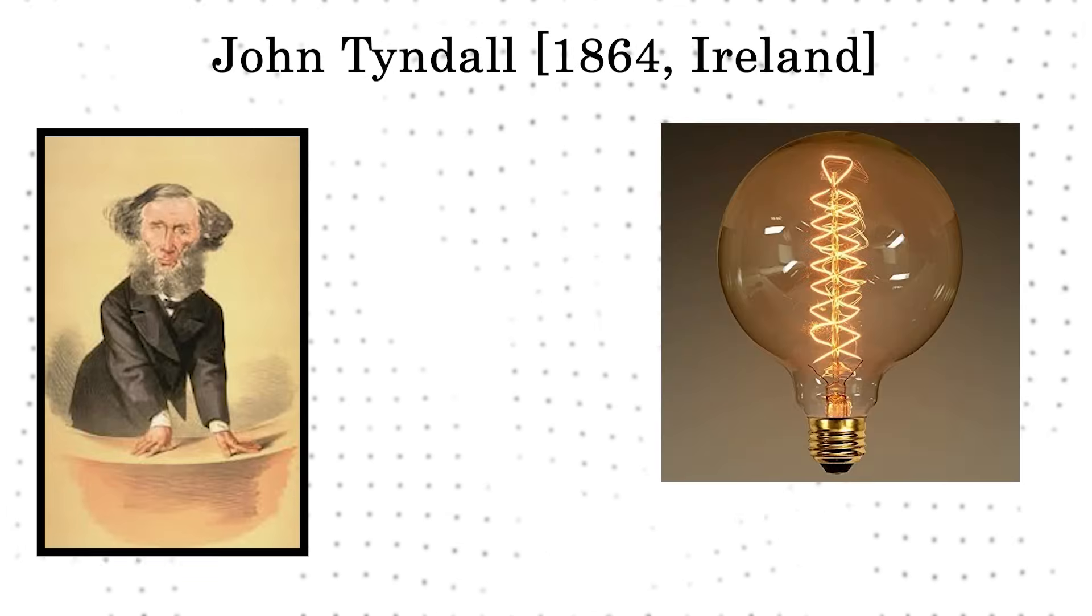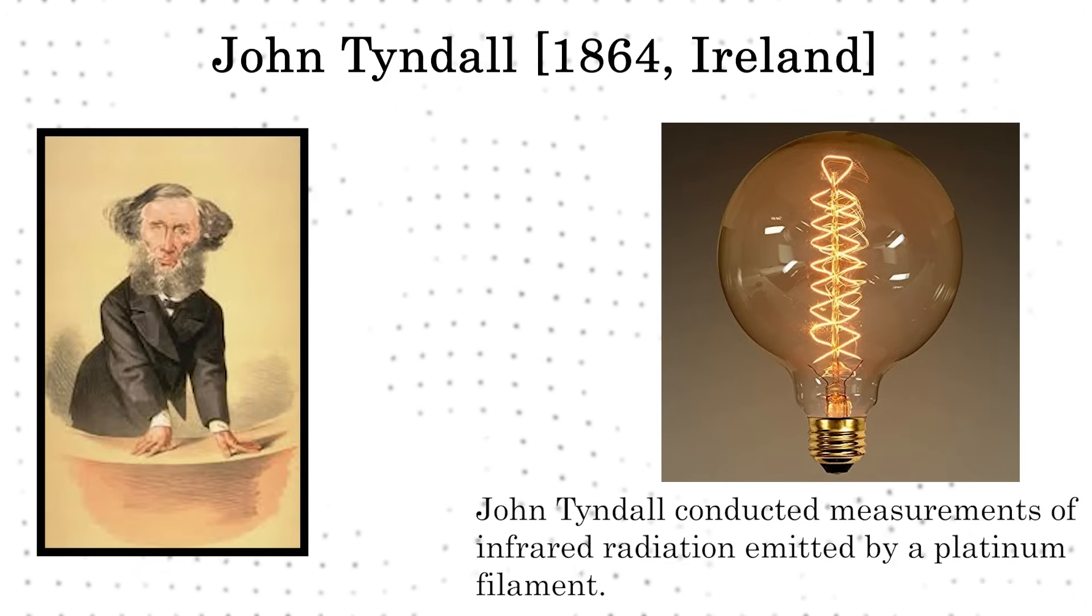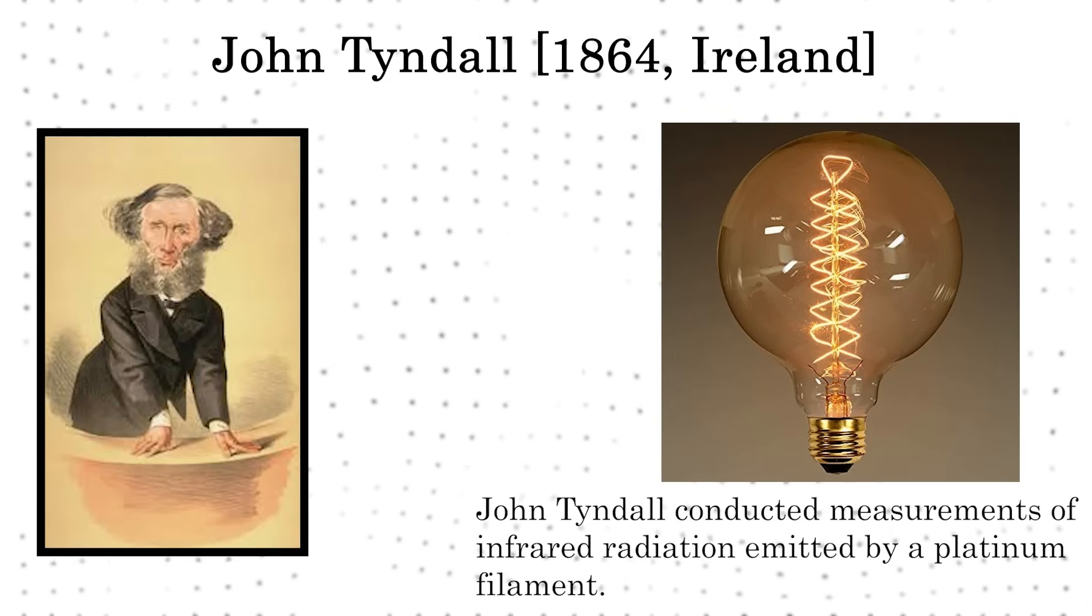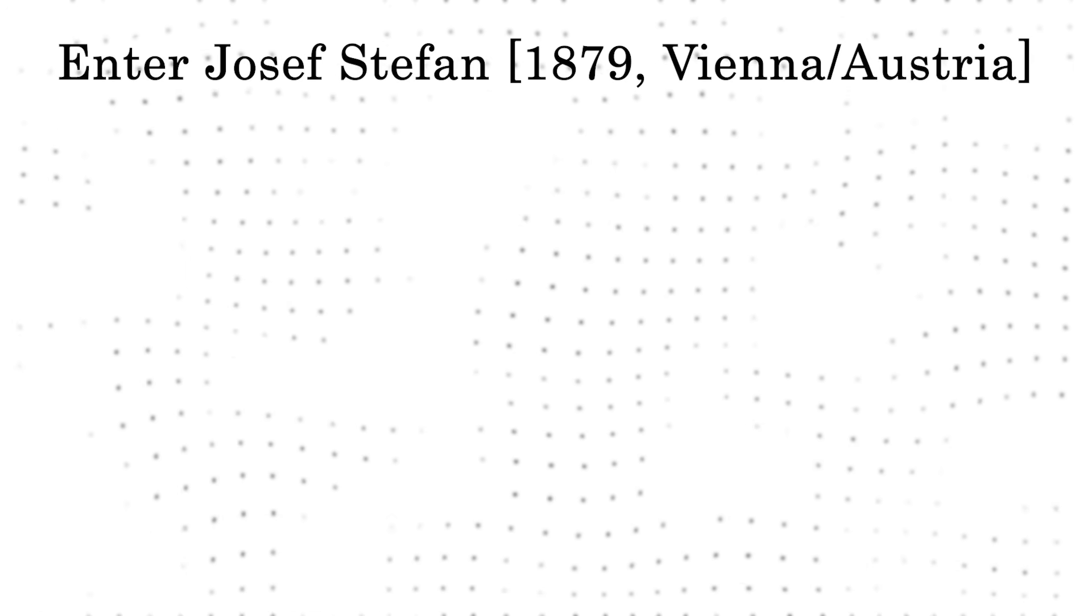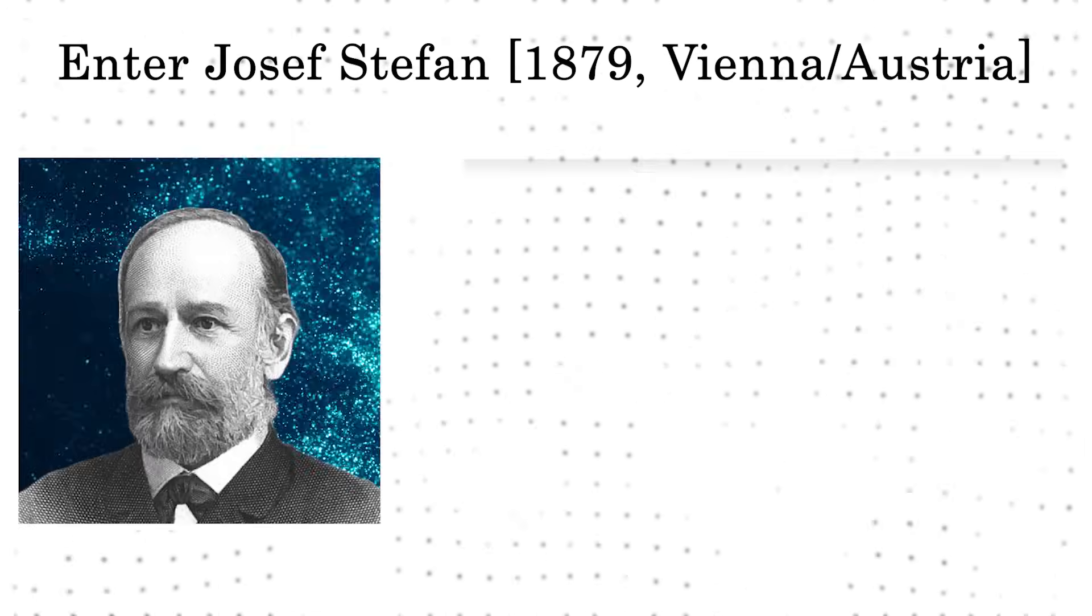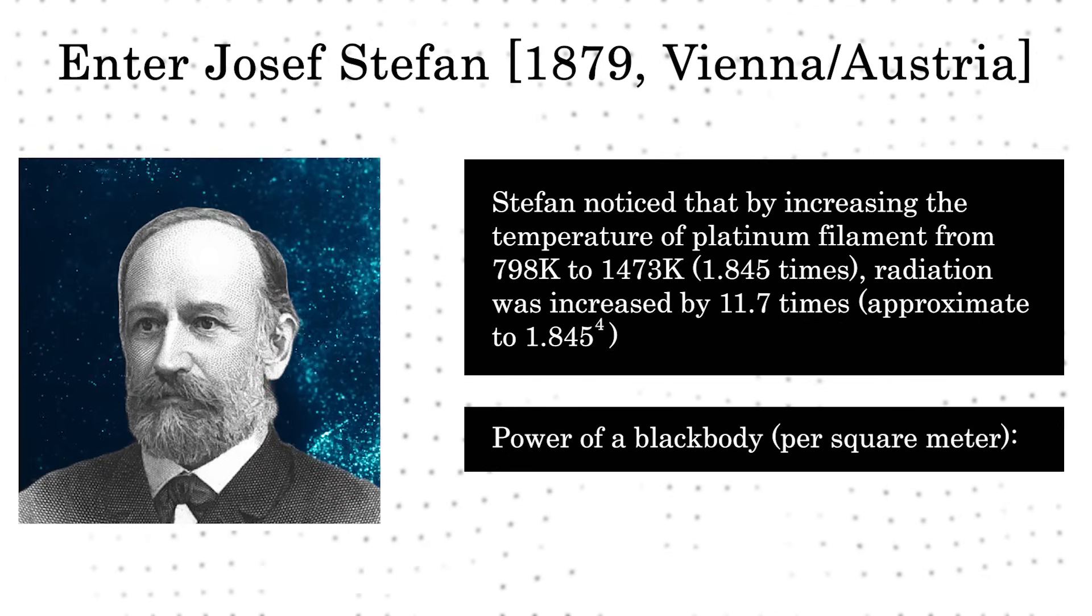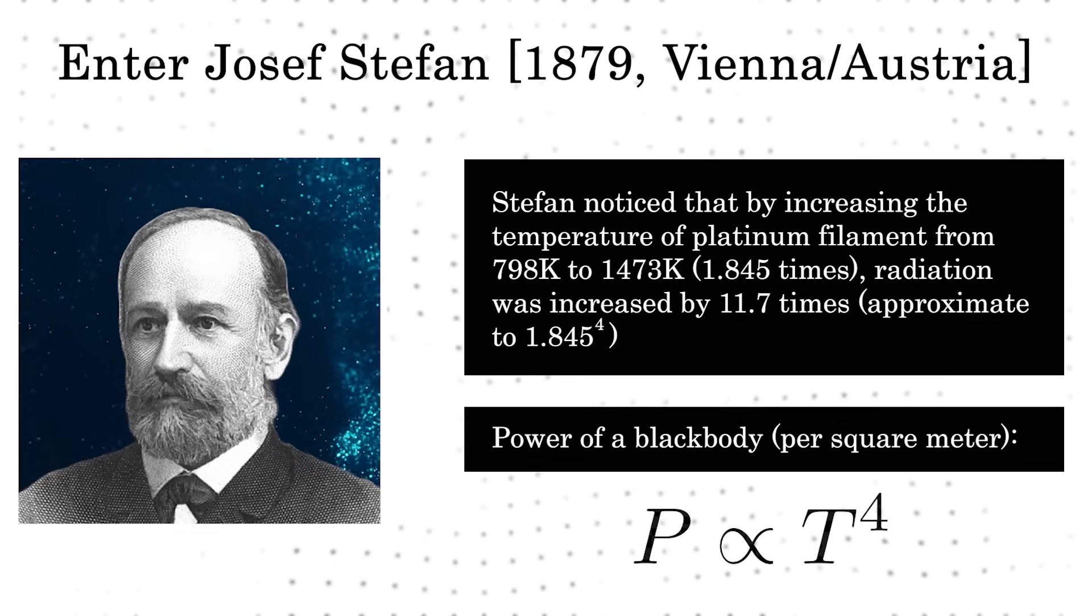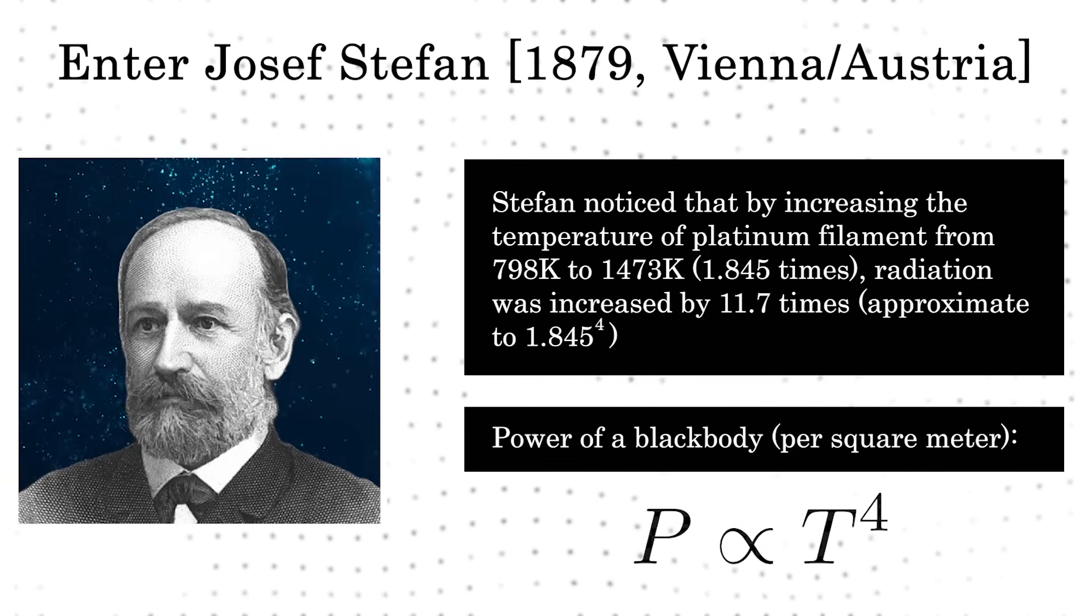In 1864, Irish physicist John Tyndall conducted measurements of infrared radiation emitted by a platinum filament. Tyndall is a well-known figure in atmospheric physics who discovered the greenhouse and Tyndall effects. In 1879, Austrian physicist Joseph Stefan studied the work of Tyndall and noticed that the total power emitted by a blackbody of one square metre surface area should go at the fourth power of the temperature. Note that this is purely an empirical result.